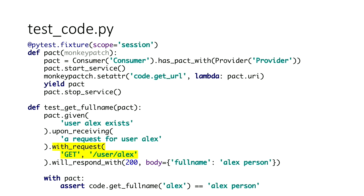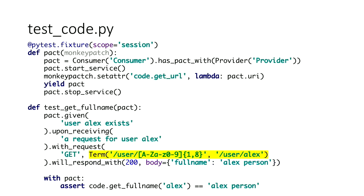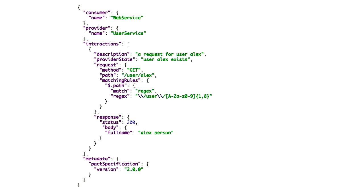The interaction declares a request from the consumer and the response from the provider. This mock is useful for a single unit test, but it could be more useful if we can use it for multiple unit tests. We can make it more flexible with some tools in the PACT toolkit. Here is an example using the term matcher so that the mock can be used in other unit tests with different user names. This is how the PACT file is generated as a JSON file. The font on these slides may be a bit small, but I'll explain the next section as we go on.